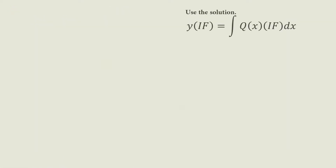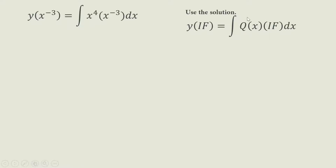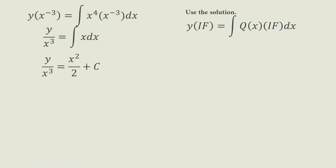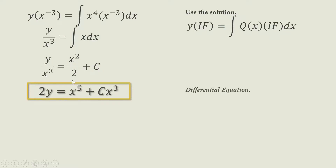Next, we use the solution for linear in Y, multiplying both sides by the IF. So Y times IF (X⁻³) equals the integral of Q(X) times IF, which is X⁴ times X⁻³ DX. The left side has X⁻³ as the denominator. Integrating the right side results in X² over 2 plus C. Cross-multiplying, our solution is 2Y equals X⁵ plus C times X cubed.